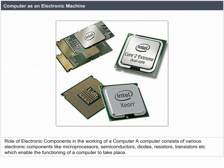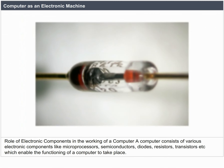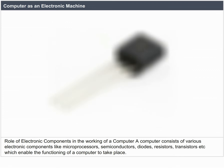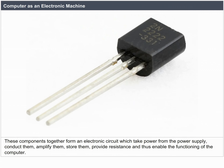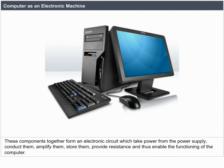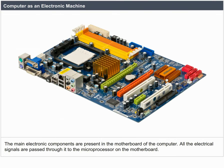Role of Electronic Components. A computer consists of various electronic components like microprocessors, semiconductors, diodes, resistors, and transistors, which enable its functioning. These components together form an electronic circuit that takes power from the power supply, conducts, amplifies, and stores signals, and provides resistance to enable the functioning of the computer. The main electronic components are present on the motherboard, through which all electric signals are passed to the microprocessor.